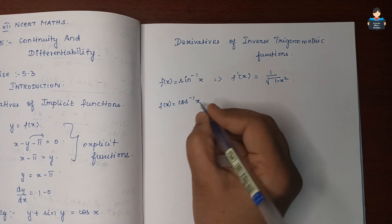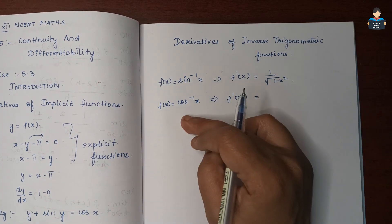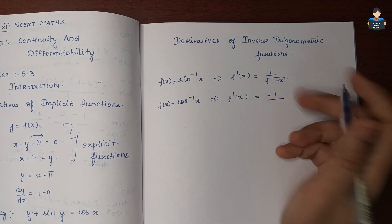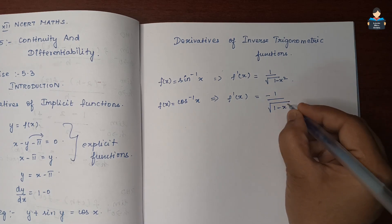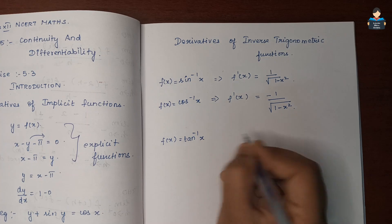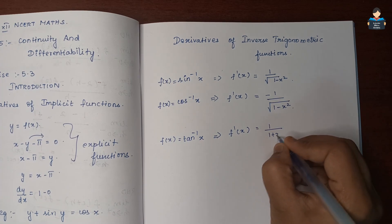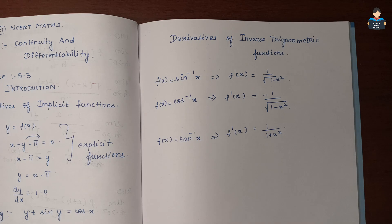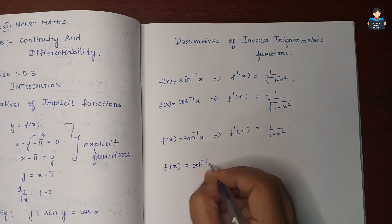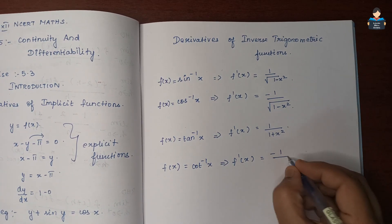And f(x) = cos⁻¹x, then f'(x) = -1 / √(1 - x²). Next, f(x) = tan⁻¹x, so f'(x) = 1 / (1 + x²). Then f(x) = cot⁻¹x, so f'(x) = -1 / (1 + x²). So the one difference is the minus sign included.